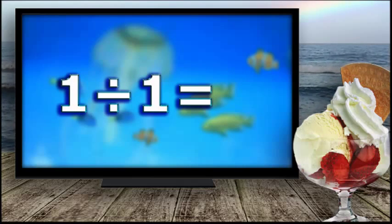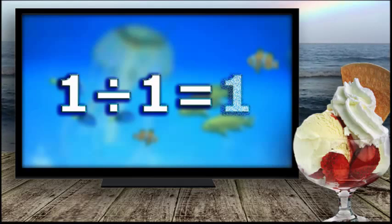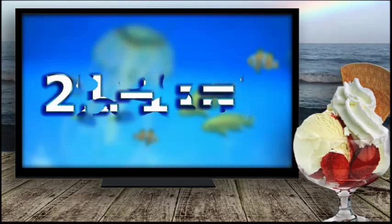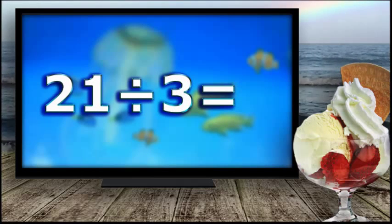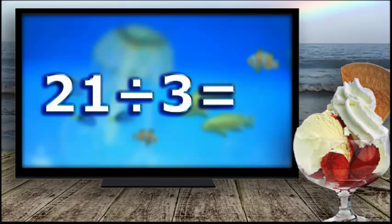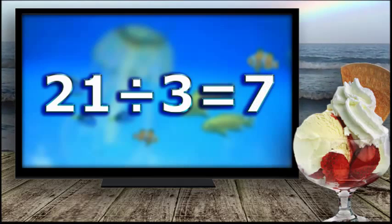One divided by one equals one. Twenty-one divided by three equals seven.